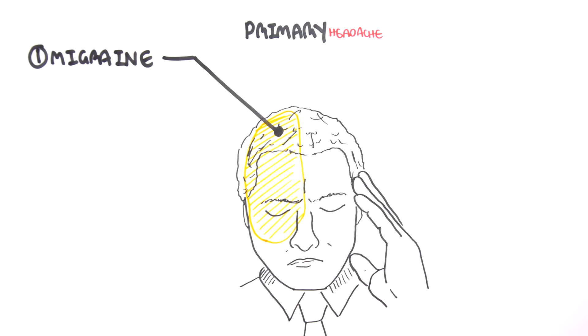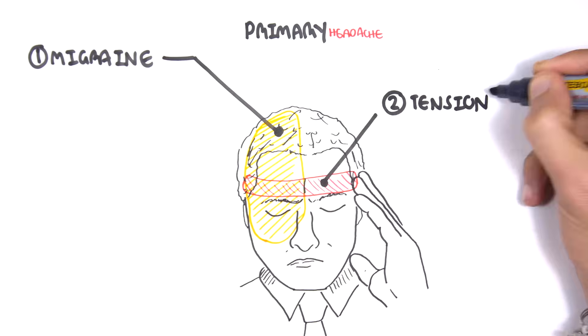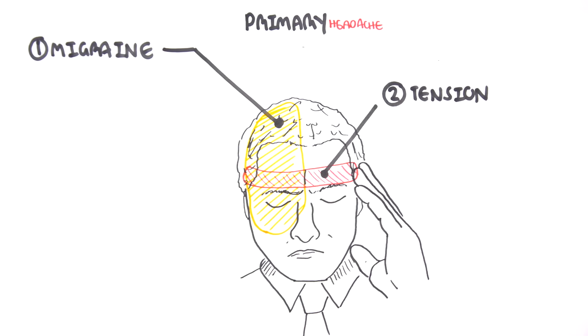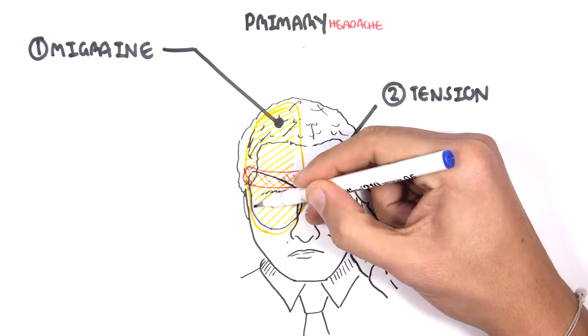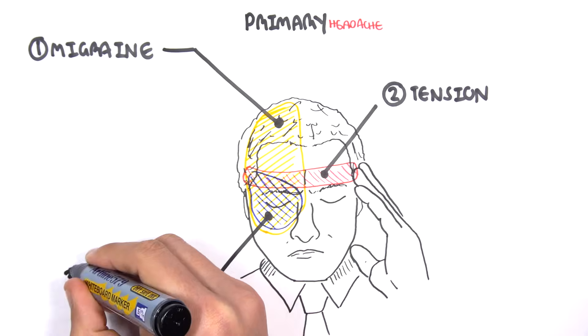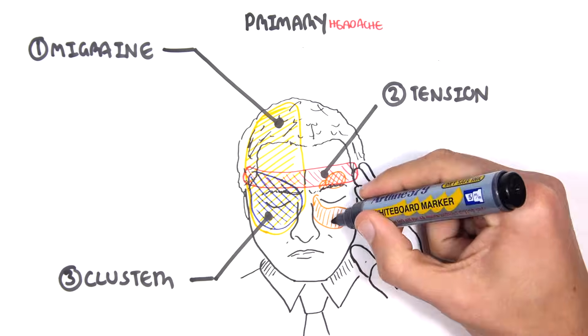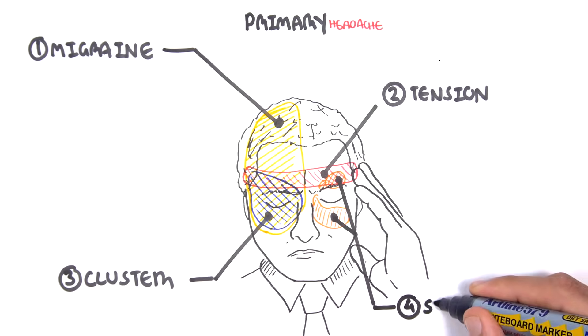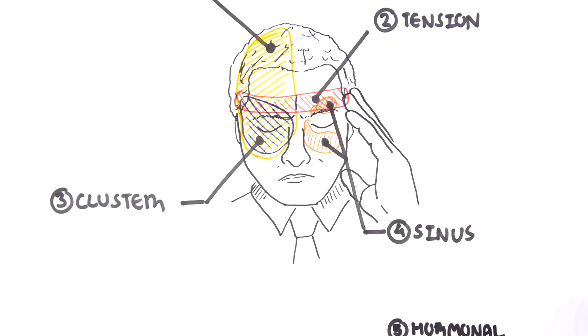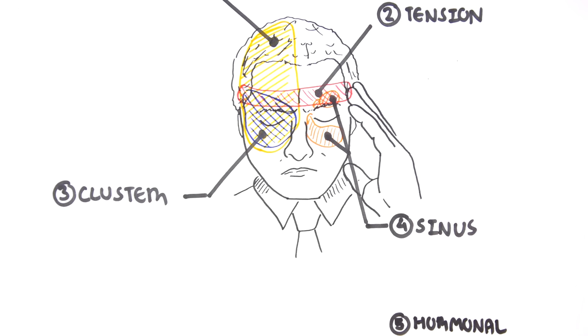Then you have tension headache which feels like a tightness around your forehead. You have the cluster headache which is around your eye orbit area. Then you have sinus headache which is related when you have sinusitis or irritation of your sinus. And you have hormonal headache which is a result of your hormonal levels changing.